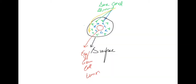To understand the classification of ovarian tumors, you have to understand the anatomy first. This is a picture of a follicle — it contains an oocyte, some granulosa cells shown in blue, some theca cells shown in green, and its surface epithelium. These components give rise to tumors.